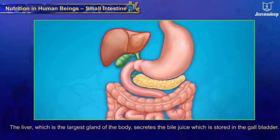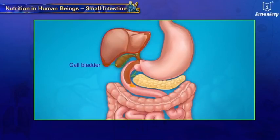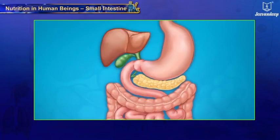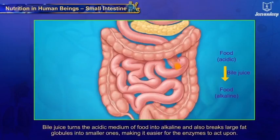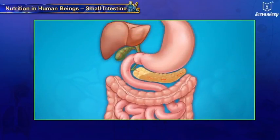The liver, which is the largest gland of the body, secretes bile juice, which is stored in the gallbladder. It is released into the small intestine as food enters. Bile juice turns the acidic medium of food into alkaline and also breaks large fat globules into smaller ones, making it easier for enzymes to act upon. Bile juice and pancreatic juice enter the intestine through a common duct.